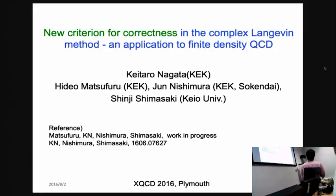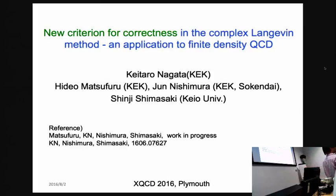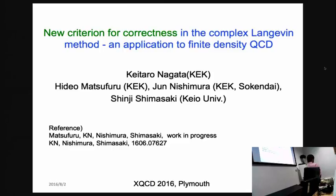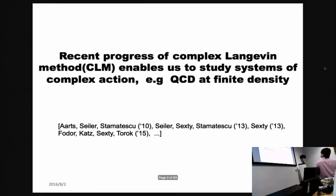This work is based on collaboration with Makino, Furu, Juni, Ishimura, Shinji Shimasaki, and Akateteke. It is based on a recent paper in which we provided theoretical discussion and application to simple toy models in one dynamical variable. Today I would like to talk about its application to gauge theories including QCD at finite density.